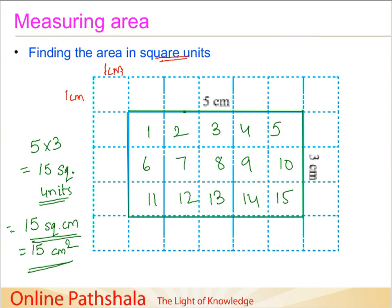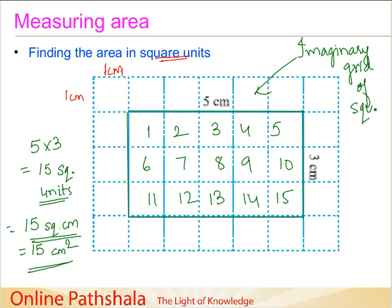Now this is when we have a very perfect figure in which we can align the boundaries of the figure exactly with the boundaries of the square grid. This is an imaginary grid of squares of size 1 centimeter by 1 centimeter, and we just assume that this figure is such that we can align them.